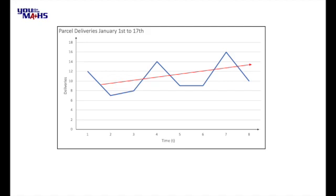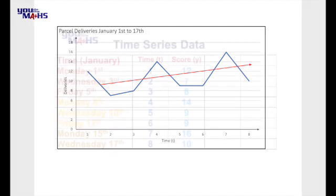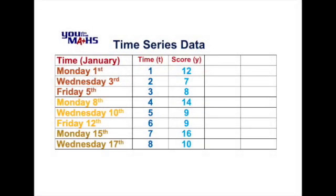One way to help us do that is to consider what are called moving averages. Let's go back to our table and look at how we determine the most appropriate moving average and how we calculate it. We can see in this data that it comes in groups of three, referring to the Monday, Wednesday, Friday of each week. So what we'll do is calculate a three-point moving average, by looking at the first three scores — 12, 7, and 8 — and determining their average.